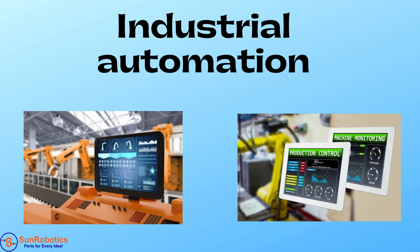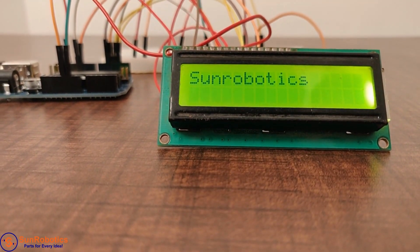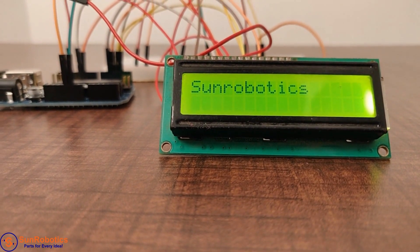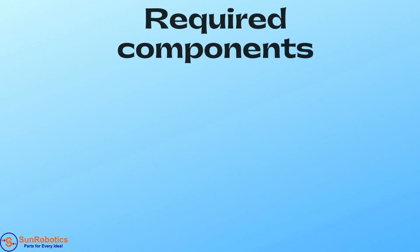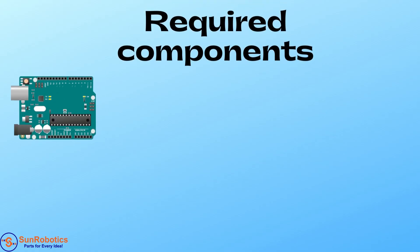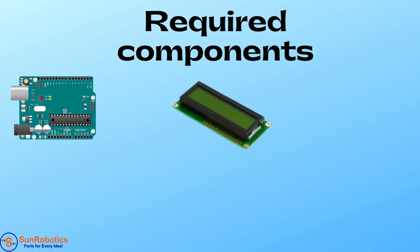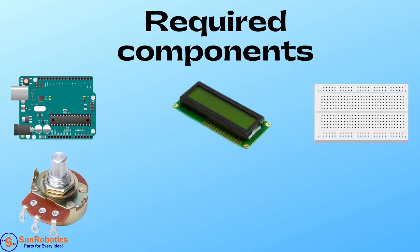Now we will learn how to control a 16x2 LCD using Arduino and ChatGPT. Required components are: Arduino UNO, 16x2 LCD display, redboard, potentiometer, and jumper wires.